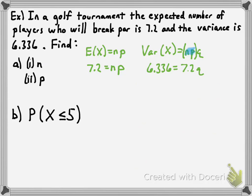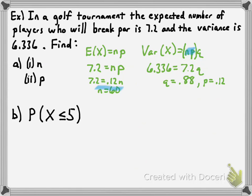Q is the probability of failure — the probability a golfer does not break par. Solving gives q equal to 0.88, meaning 88% of players will fail to break par. From that, p equals 1 minus 0.88, which is 0.12. Then substituting into the expected value formula: 7.2 equals 0.12 times n, so n equals 60. We've found n equals 60 and p equals 0.12.